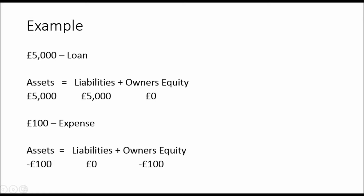If we receive a £5,000 bank loan, for example, that's a liability of £5,000. That will be a credit and we would debit assets. That £5,000 would go into a bank account, for example.